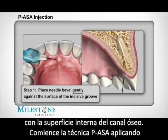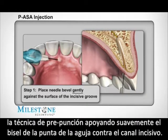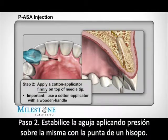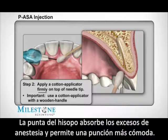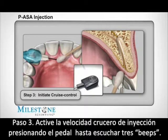Start the PASA injection by using the pre-puncture technique. Step 1: Gently place the bevel of the needle against the surface at the incisive groove. Step 2: Stabilize the needle by applying firm pressure from a cotton applicator. It's best to use a wooden handle cotton applicator so that positive pressure can be applied. The applicator also absorbs any excess anesthetic solution and makes for a more comfortable needle entry.